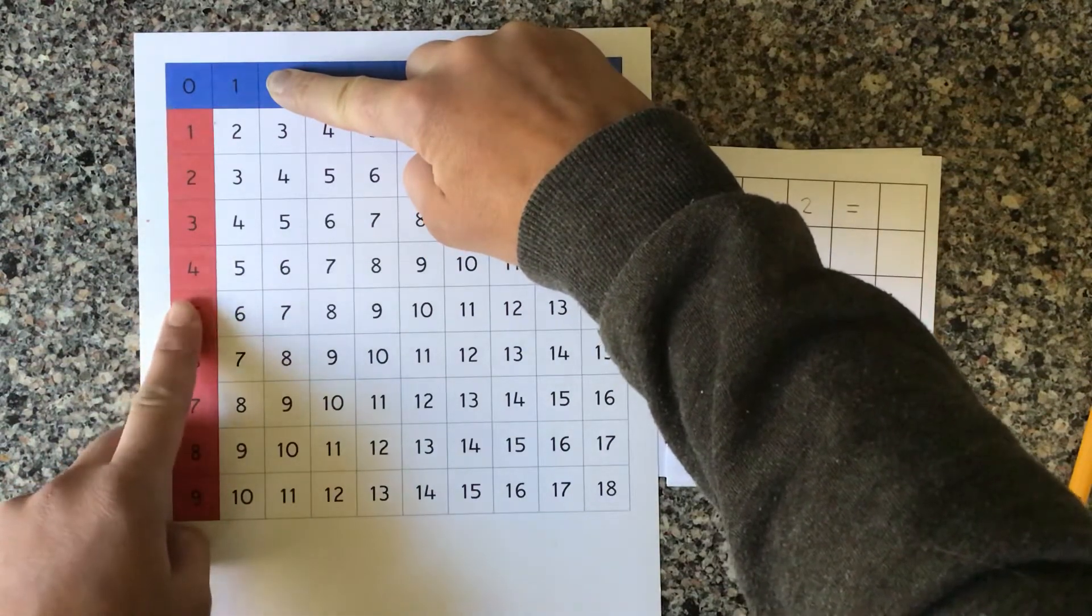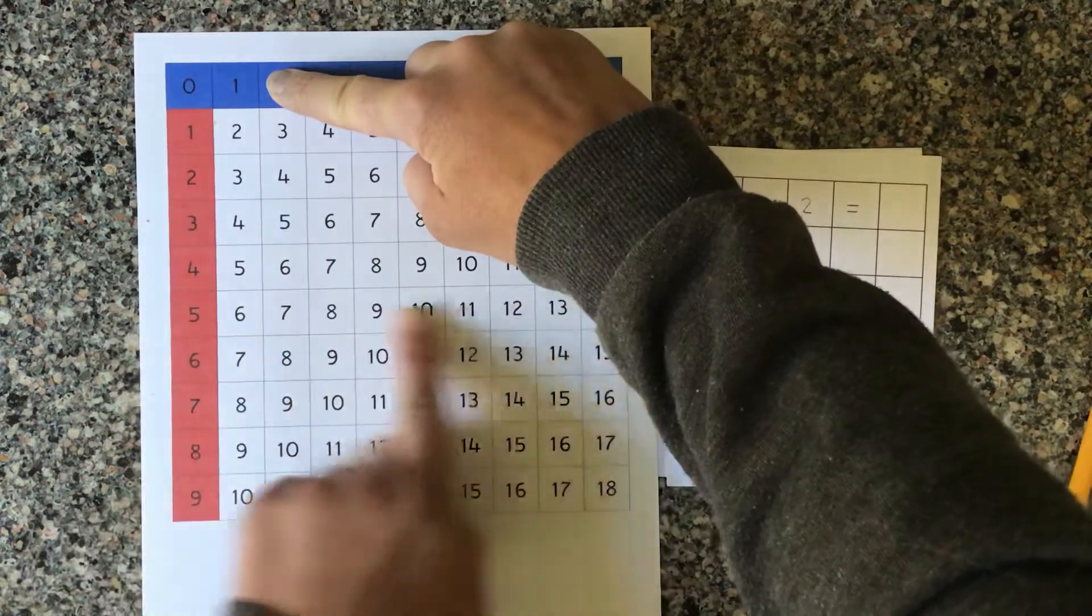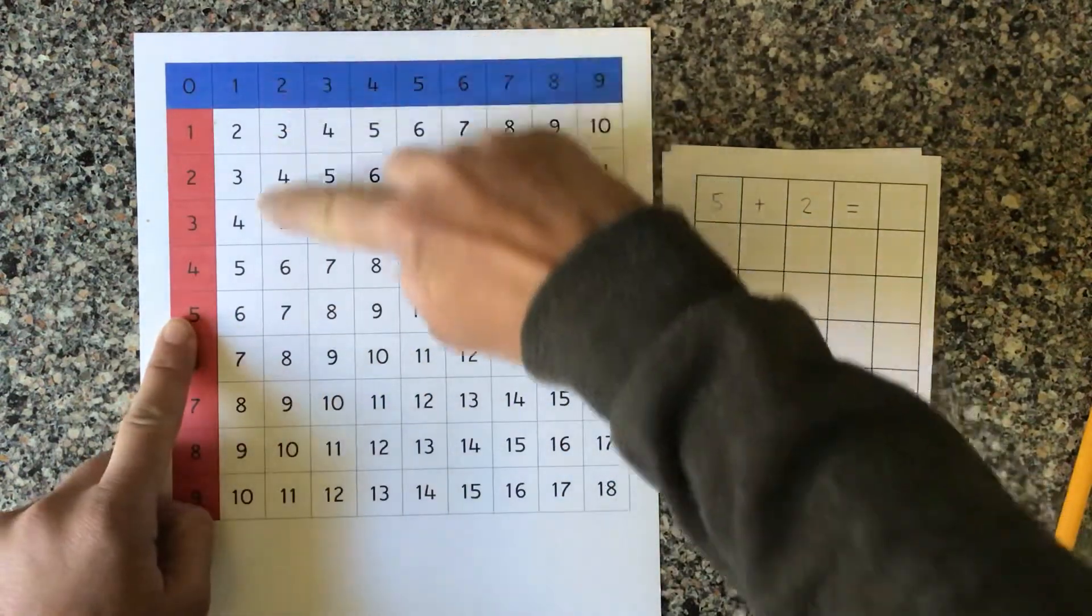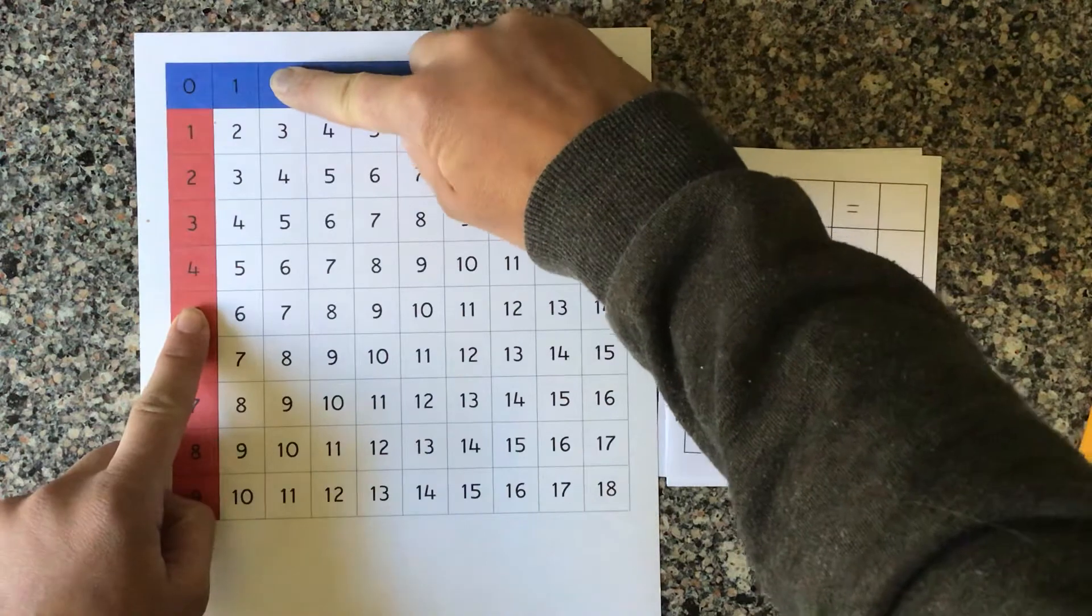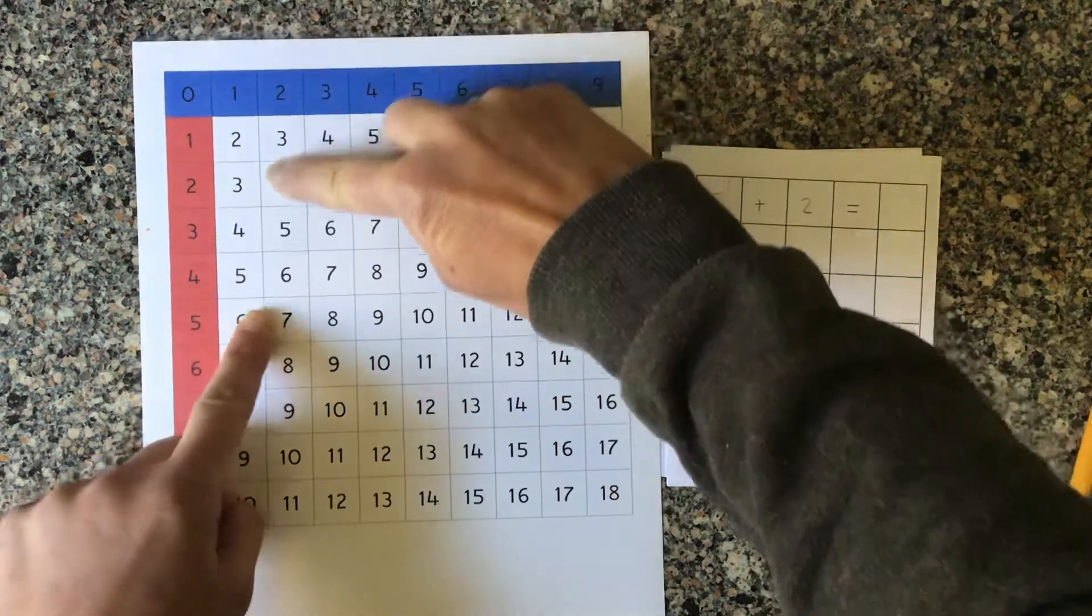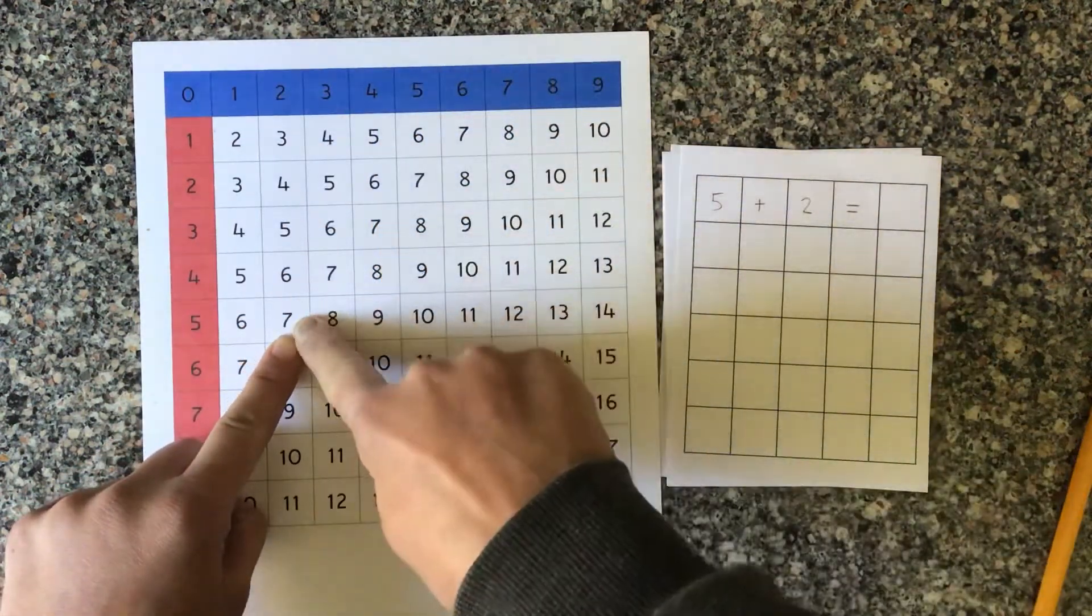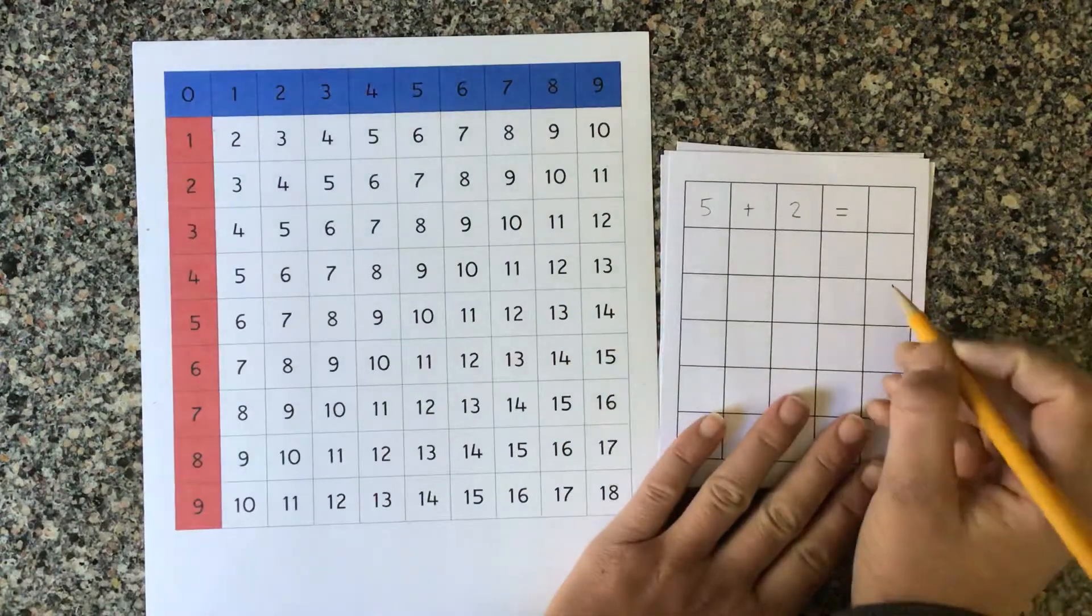I'm going to bring my fingers together to find the answer. The finger on the red column is going to move side to side. The finger in the blue column will move up and down, and where they meet we find the sum: 7. So we would write it here.